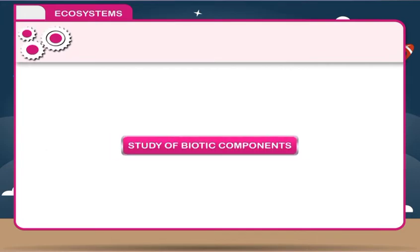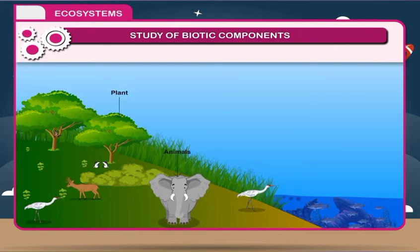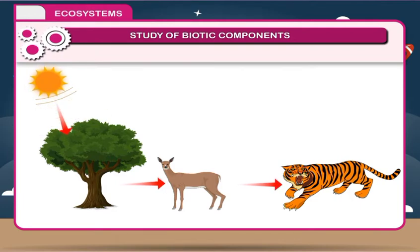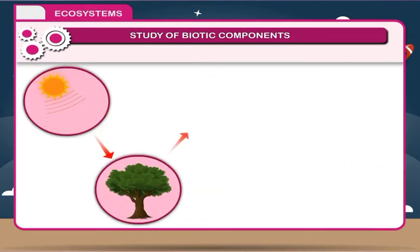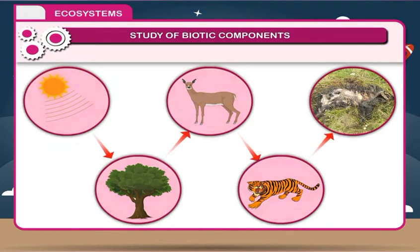Study of Biotic Components. Biotic components, or the living components of an ecosystem, consist of various plants, animals, and microorganisms. All biotic components interact with each other and with the abiotic components in the biosphere. On the basis of their mode of nutrition, the biotic components are differentiated into producers, consumers, and decomposers.